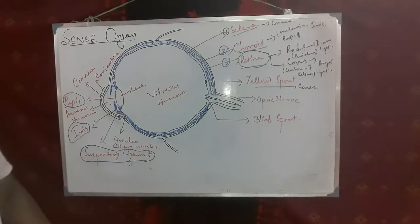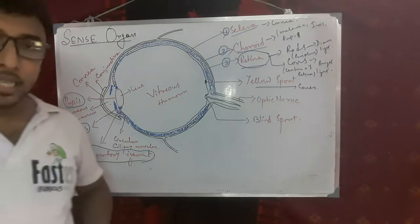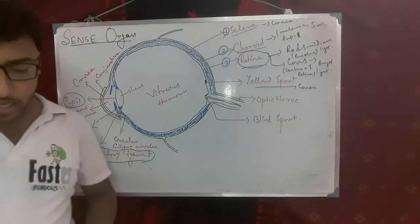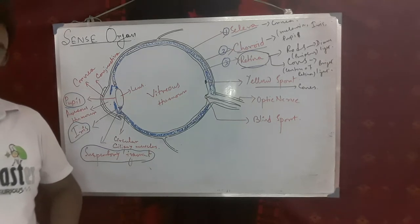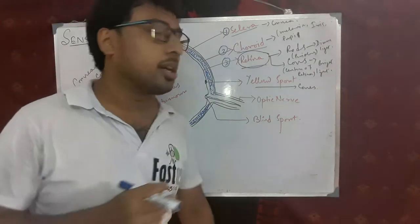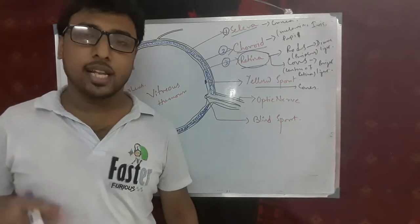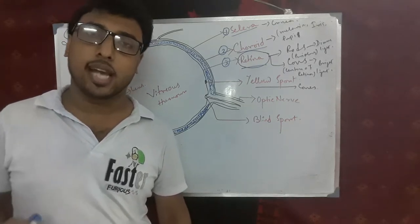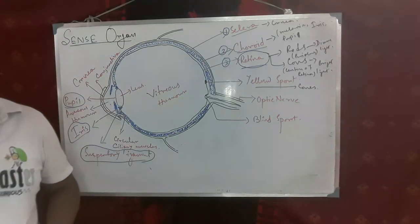Under the choroid layer, melanin is present — the same pigment also found in our skin. The function of melanin in our eyes is to prevent light rays from reflecting and scattering inside the eye. This is important because if light were to reflect or scatter, we could not see objects properly. So melanin helps prevent reflection and scattering of light inside the eye.